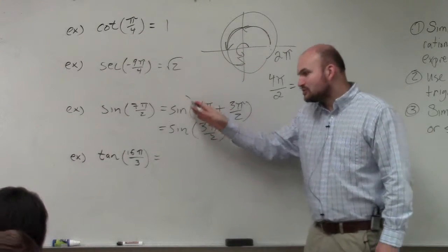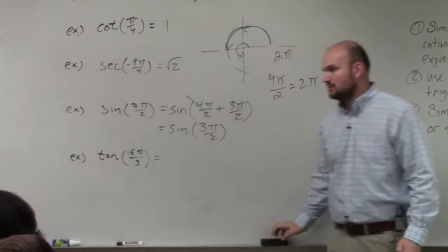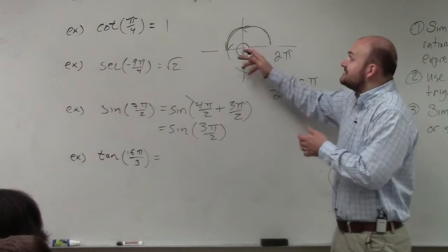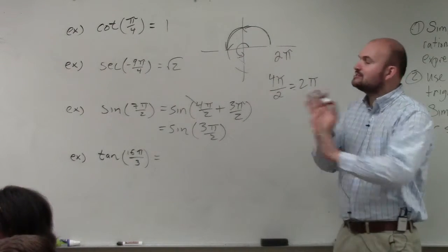So by crossing this out, all I'm doing is eliminating the extra circle. The coterminal angles have the same initial and terminal side. It just makes it easier. You don't have to do it, it just makes it easier.